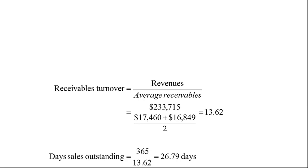We can do the same for receivables. To calculate receivables turnover, we take revenues and divide by average receivables — the same sort of calculation we just did for inventory turnover. Revenues of $233 billion divided by average receivables gives a receivables turnover of 13.62. We can convert this into days: days sales outstanding is 365 divided by receivables turnover, which gives 26.79 days. That means when Apple extends credit to someone, they get paid in a little less than 27 days.